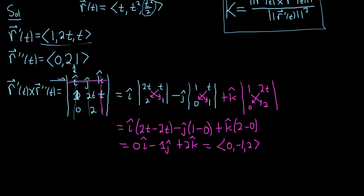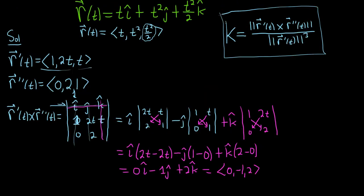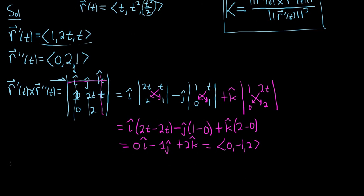So this will be the cross product. And we just need the magnitude of this now. So let's go ahead and jump to that right away. So the magnitude of r prime of t crossed with r double prime of t is equal to the magnitude of this vector. So we take the square root and we square each of the components. So 0 squared plus negative 1 squared plus 2 squared. So it would be 1 plus 4, so 5. Square root of 5. So this is what's going to go up top in our formula.